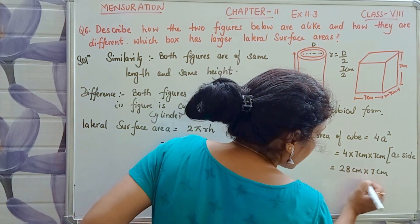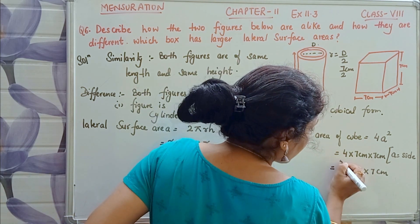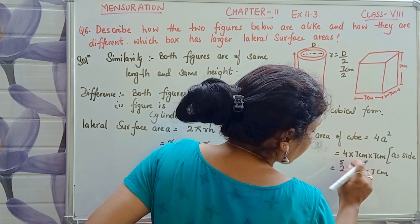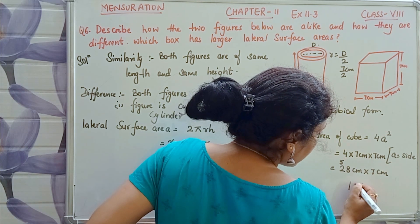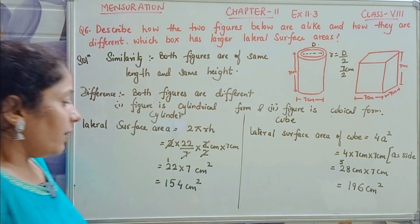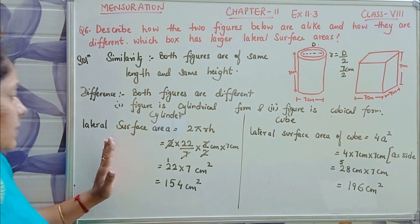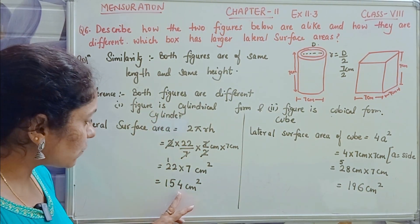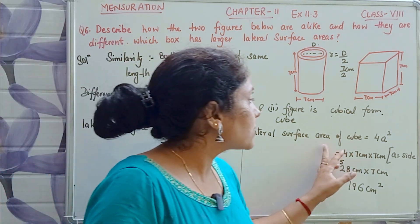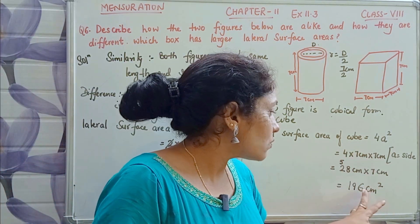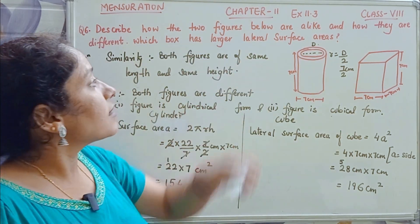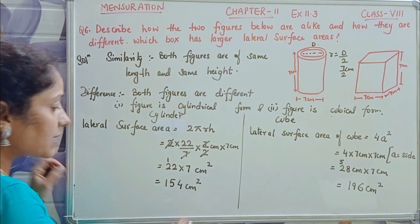Now 8 sevens are 56, carry 5, and 7 twos are 14 plus 5 is 19 — giving 196 centimeters square. So the lateral surface area of the cylinder is 154 cm² and the lateral surface area of the cube is 196 cm².